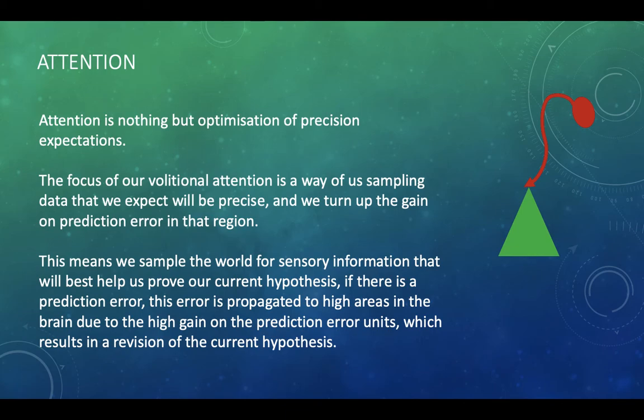So another way of putting this is that we sample the world for sensory information that will help us prove our current hypothesis about the world. And if there's a prediction error, this error will be propagated to the highest areas of the brain due to the high gain on the prediction error units. And this prediction error will then result in a revision of the current hypothesis. So when we're focusing on things, when we're looking and we're being attentive, hearing out for something, what's happening here is that we are sampling the data that we think is most precise. We're turning up the gain on those units. And then we can then revise our hypothesis if it's not what we expect.